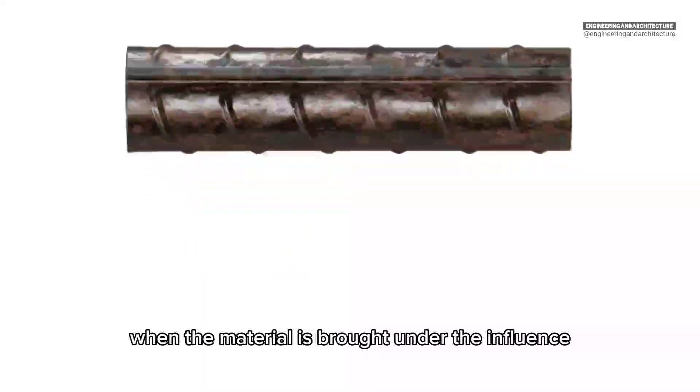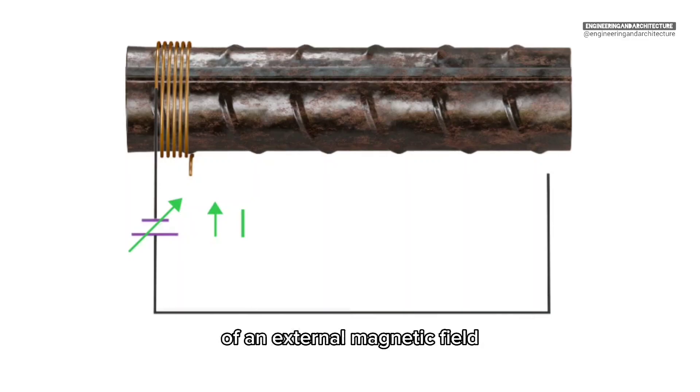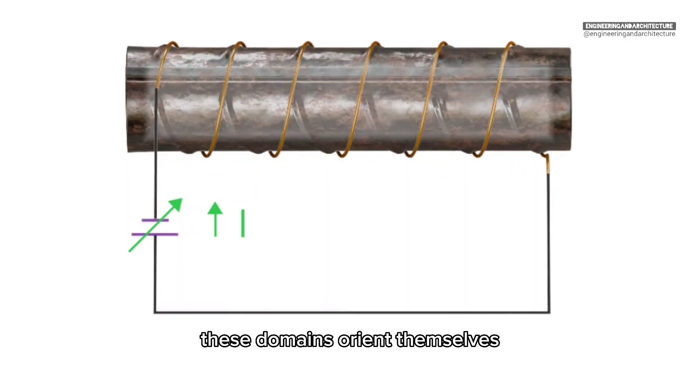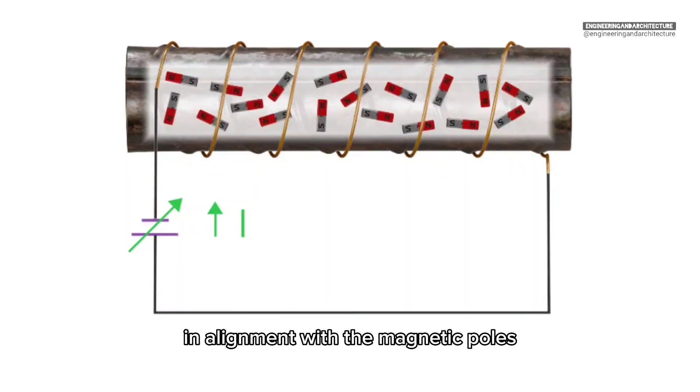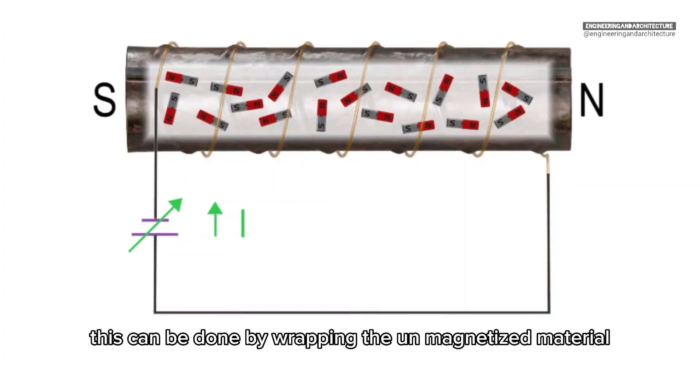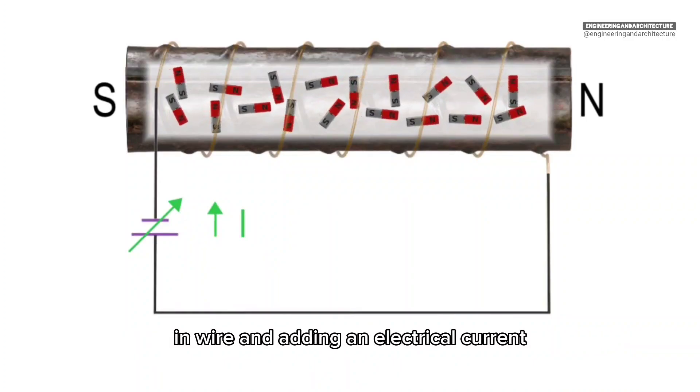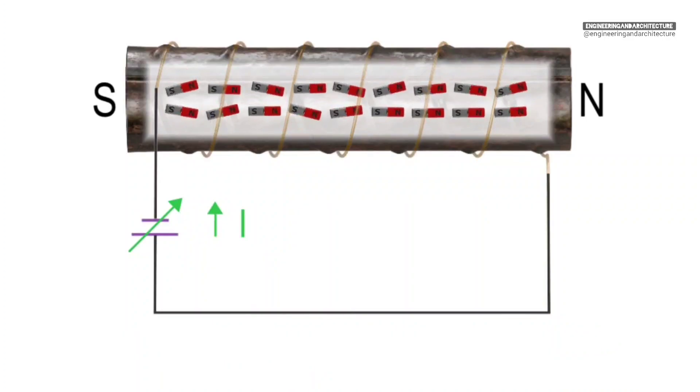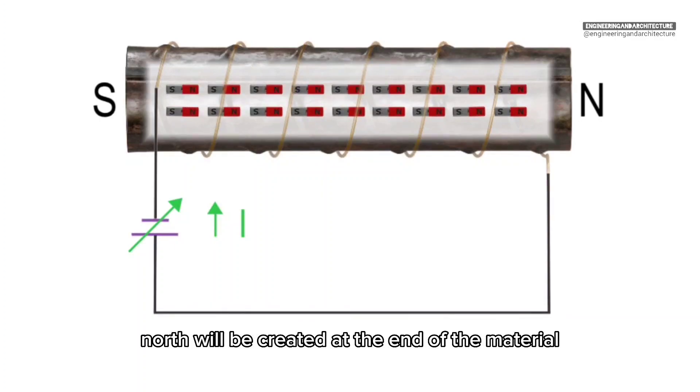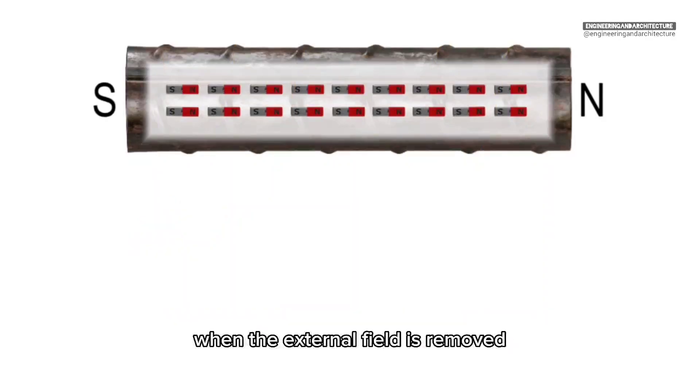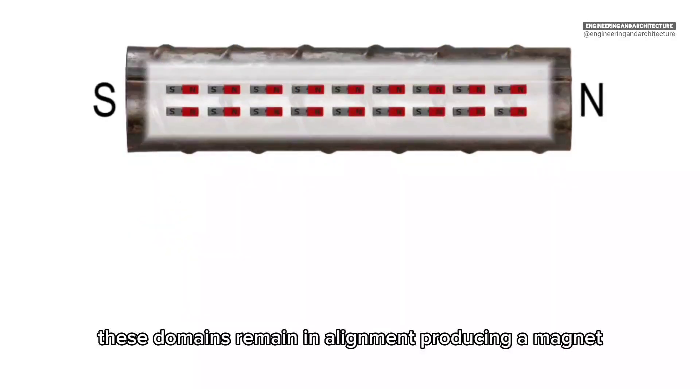When the material is brought under the influence of an external magnetic field, these domains orient themselves in alignment with the magnetic poles. This can be done by wrapping the unmagnetized material in wire and adding an electrical current. North will be created at the end of the material in which the current is directed. When the external field is removed, these domains remain in alignment, producing a magnet.